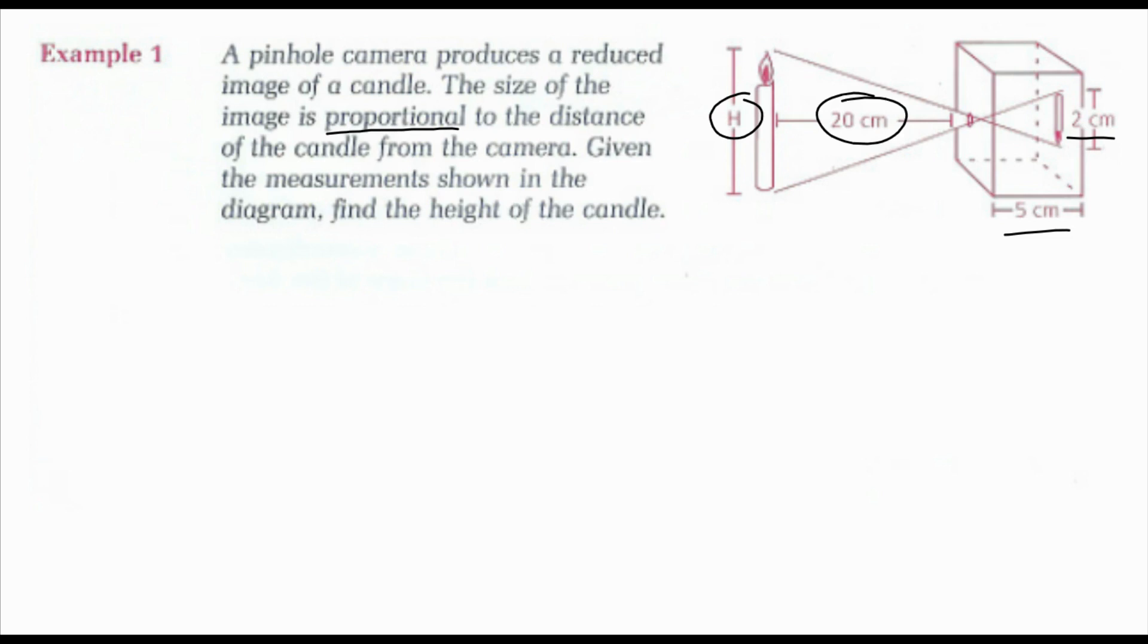So setting up a proportion, if I kept my heights together, I would have h over 2. If I have h in the numerator, then I need 20 in the numerator, so h over 2 would equal 20 over 5. Then if I multiplied out, I'd get 5h equals 40 and h equals 8.